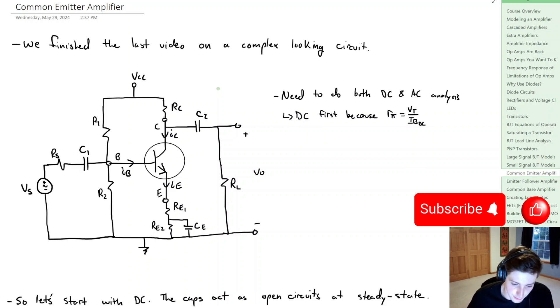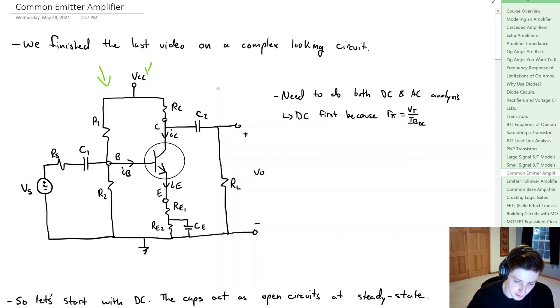In the last video we finished by looking at a pretty complex circuit. We had a DC source, an AC source, an NPN transistor, some capacitors, some resistors, and then some output voltage.